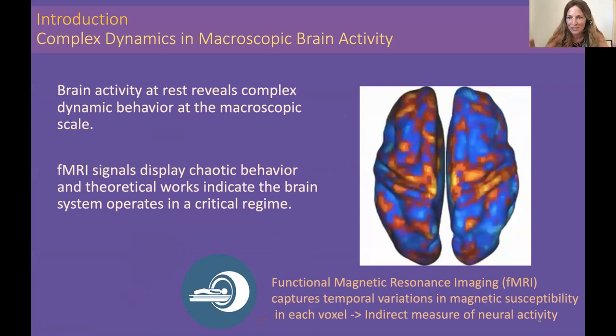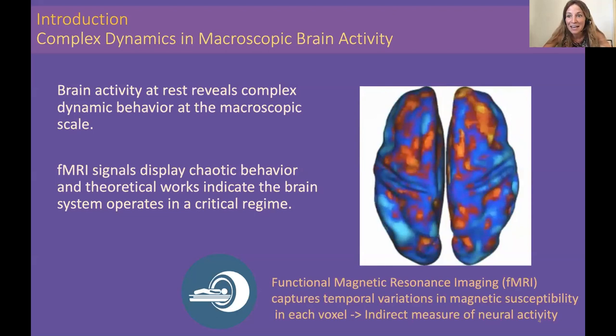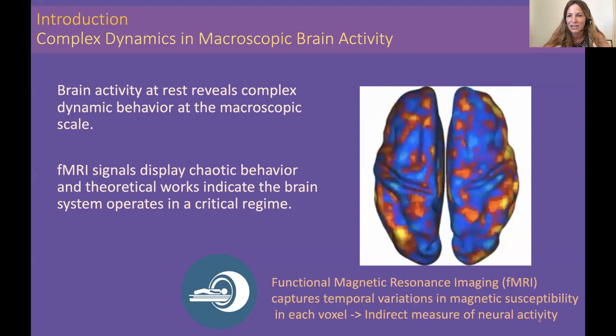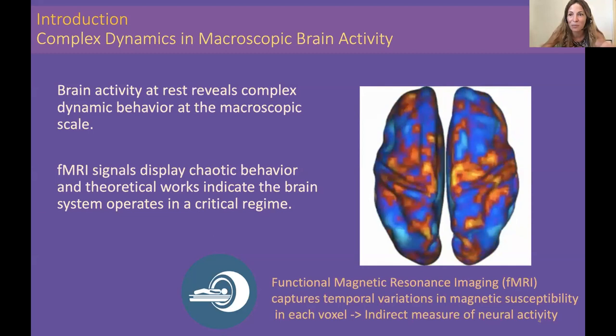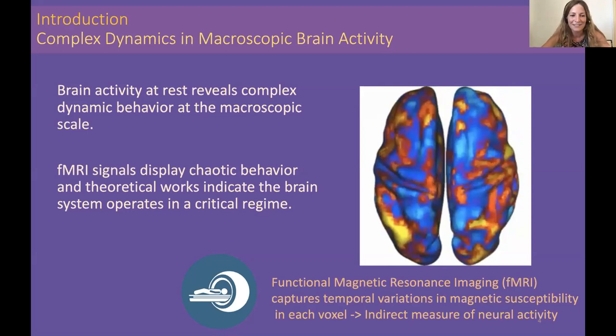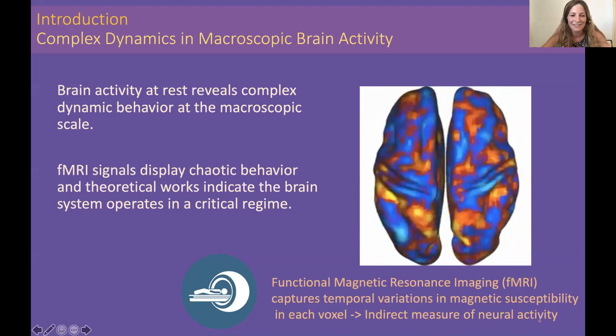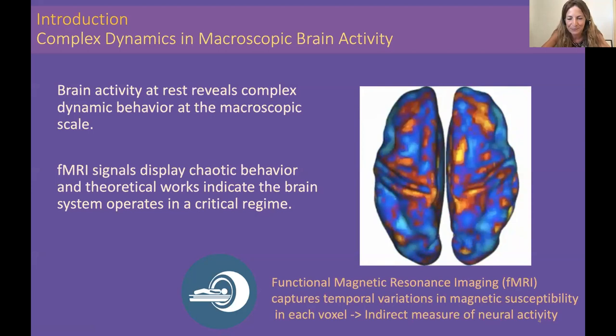I will always be focusing on the macroscopic scale. This signal is an indirect measure of neural activity. It captures variations in magnetic susceptibility, supposedly linked to a more dynamic response. Theoretical works have started to dig into this activity, and they indicate that the brain system operates in a critical regime.